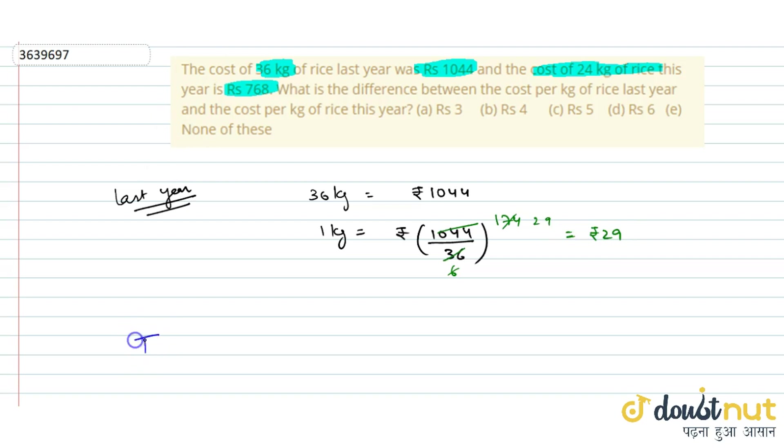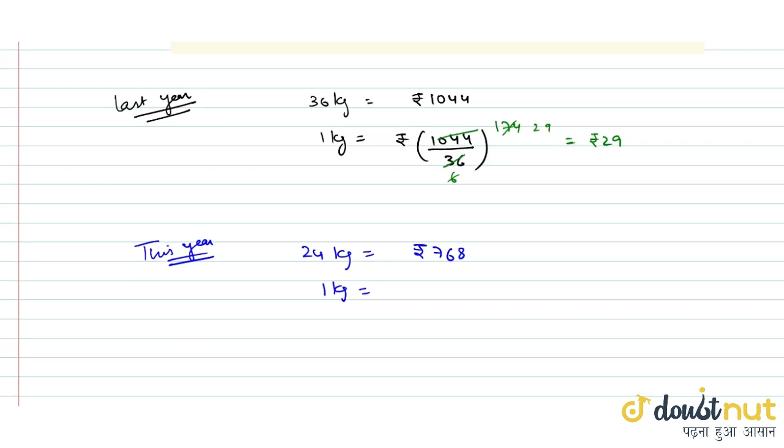Now, this year. This year, 24 kg is Rs. 768. So 1 kg, we have Rs. 768 upon 24.